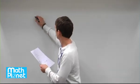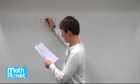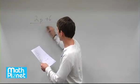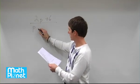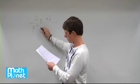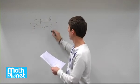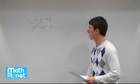Here we have a rational expression: 2p plus 6 over the quadratic expression p squared plus p minus 6. We want to simplify this as much as possible.